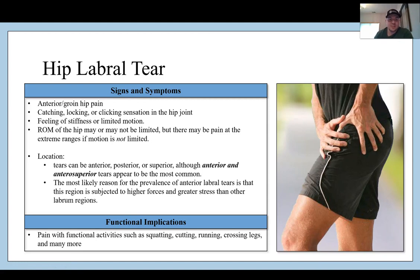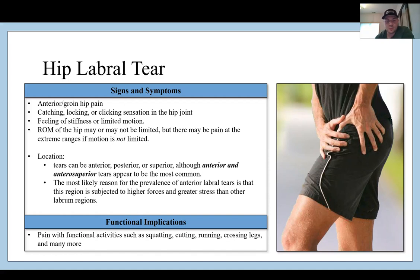Signs and symptoms include anterior groin and hip pain, catching, locking, clicking, feeling stiff, or limited motion. Range of motion may or may not be limited, but there may be pain at the extreme ranges if motion is not limited. Tears are usually anterior and superior — repetitive stress at the anterior superior acetabulum can wear down the labrum there and cause an eventual degenerative labral tear.